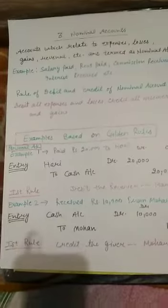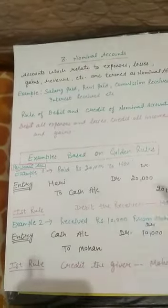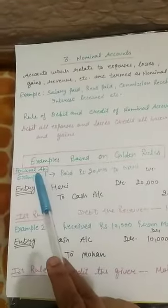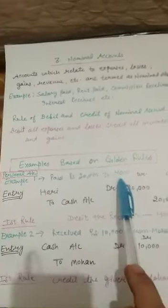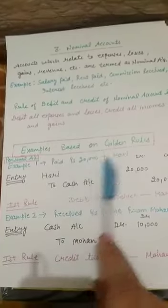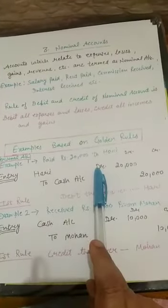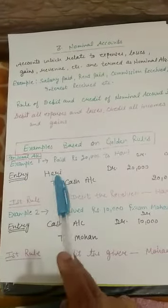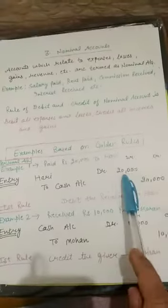Now let's apply these rules with examples. For personal account — debit the receiver, credit the giver — example one: paid rupees 20,000 to Harry. Harry is the receiver, so Harry will be debited. The entry will be: Harry account debit to cash account. Cash is paid, so cash account is credited. Debit 20,000 and credit 20,000.